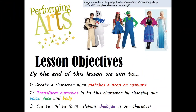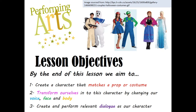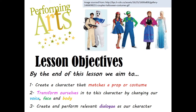As always, we start off our lesson by looking at our lesson objectives. By the end of this lesson, we aim to: one, create a character that matches a prop or costume; two, transform ourselves into this character by changing our voice, face, and body; and three, create and perform relevant dialogue as our character.